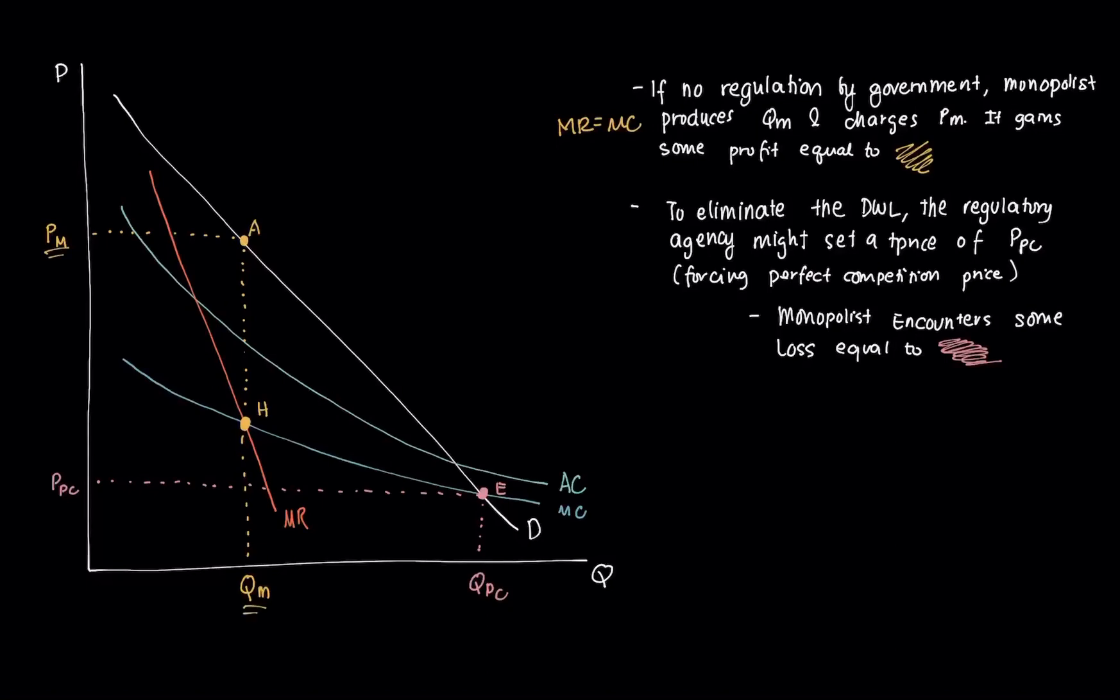Now, the cost of the monopolist is only here. Let's name this BC. The total cost of the monopolist is zero QM BC. Essentially, its revenue is PM.